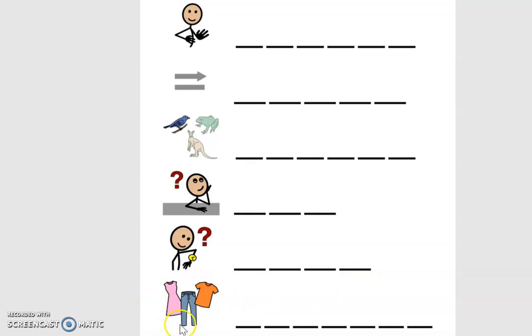Number six. You remember what this picture is? Clothes. We wear clothes on our body. Clothes. Write it here. Clothes.